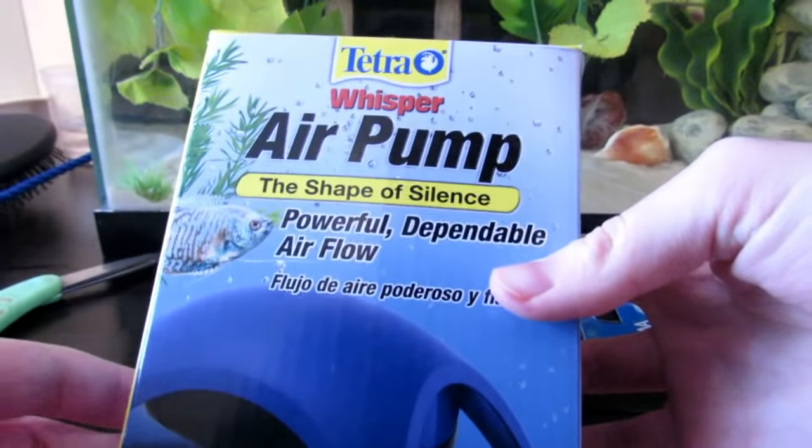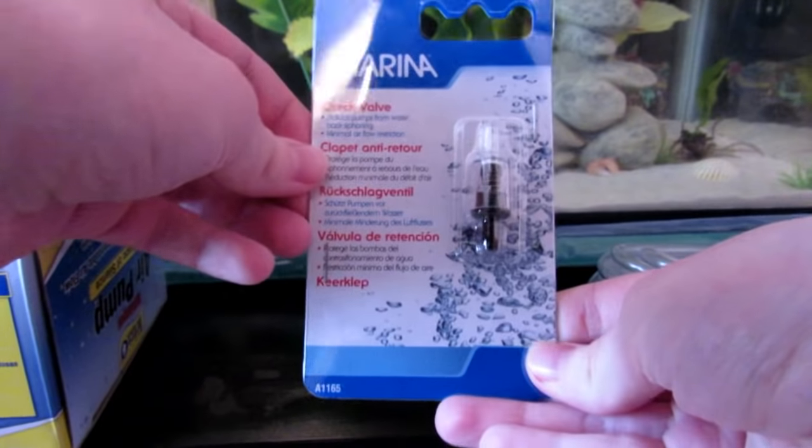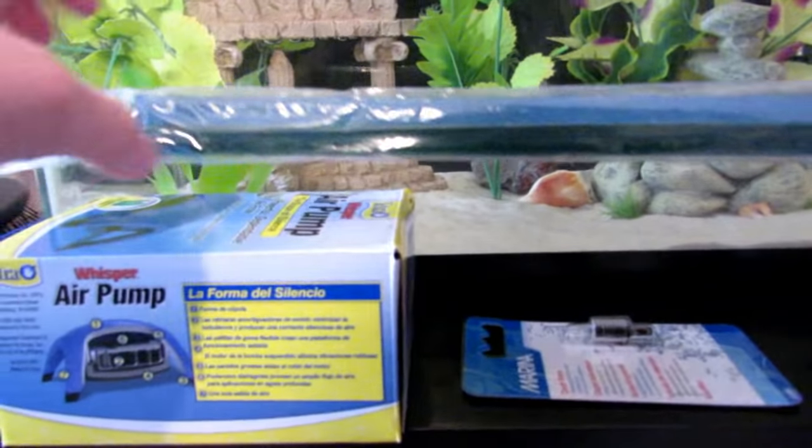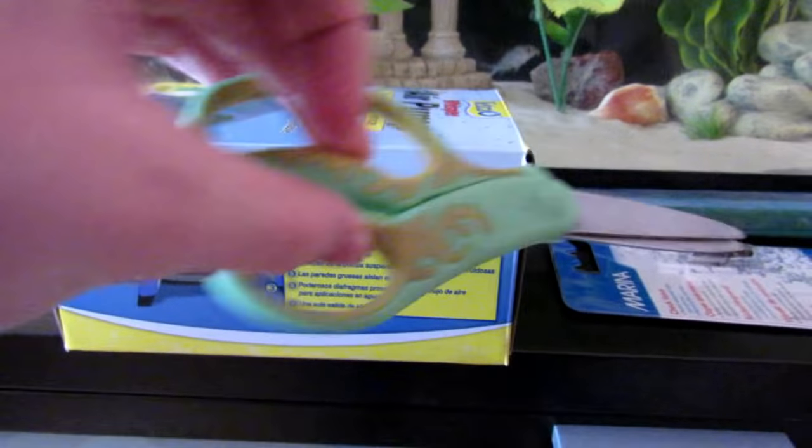First, of course, you're going to need the air pump. And then you're going to need this check valve and your air stone, some scissors, and the tubing.